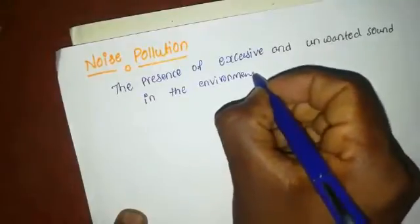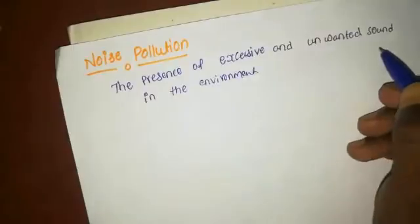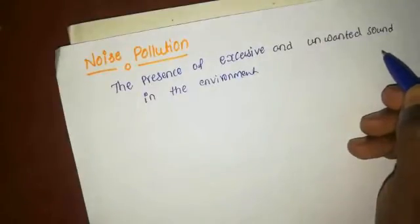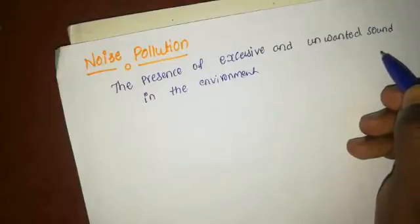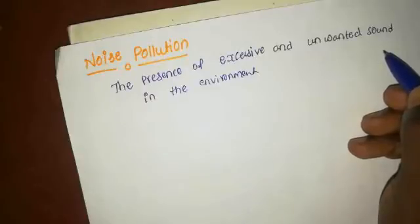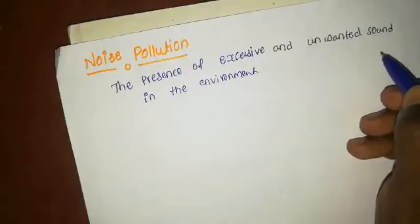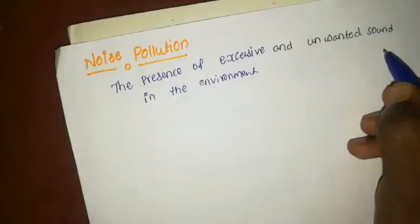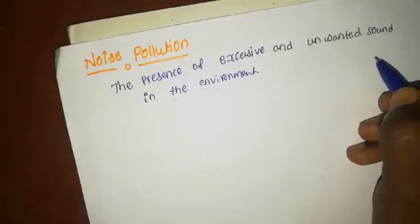Which are the unwanted sounds present in the environment? For example, in road traffic, the number of vehicles blowing horns — this is an unwanted sound present in the environment which causes noise pollution. Also, during the take-off and landing of planes, more sound is produced, which causes noise pollution. These are all excessive and unwanted sounds present in the environment that lead to noise pollution.